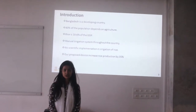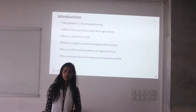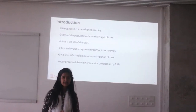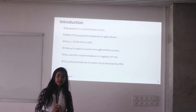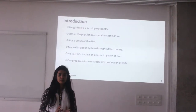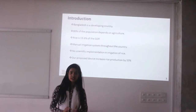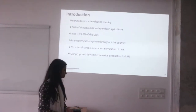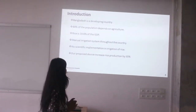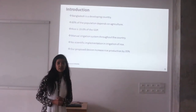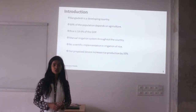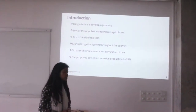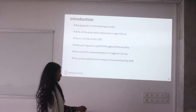Now we will discuss the introduction. Bangladesh is a developing country and around 80% of the population depends on agriculture. Boro is one of the widely grown crops in Bangladesh. There are three types of cultivation: Boro, Aus, and Aman. In Bangladesh, we are mainly focusing on Boro rice cultivation. Boro is easily grown during the winter season. The GDP contribution rate is 19.6%. The farmers of our country have limited knowledge about precision irrigation, so mostly they use manual irrigation throughout the country. There is no scientific implementation in irrigation of rice. Our proposed system can increase rice production by 35%.